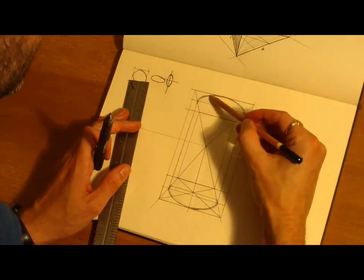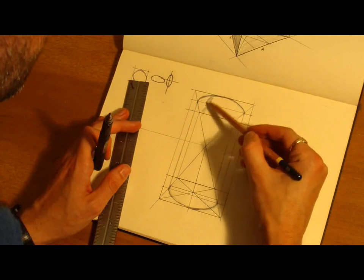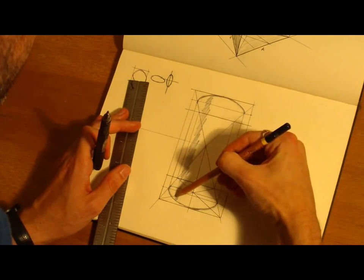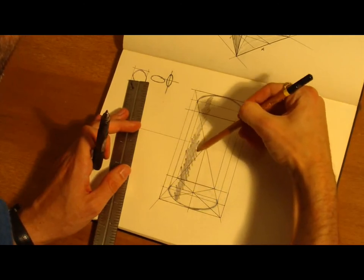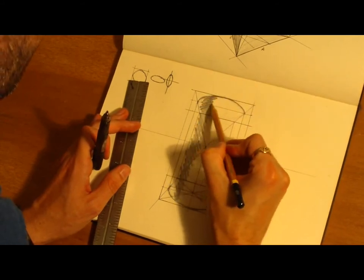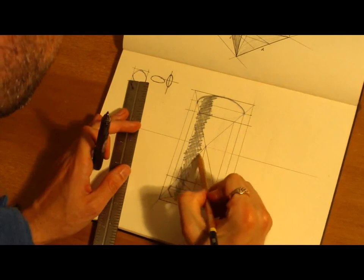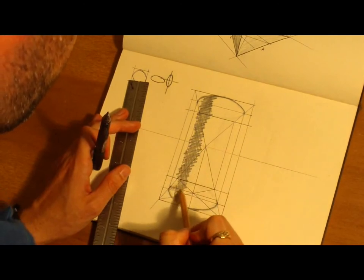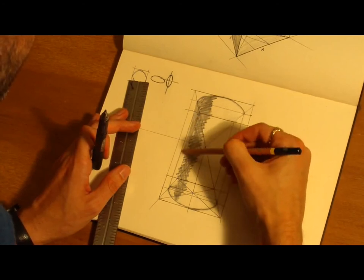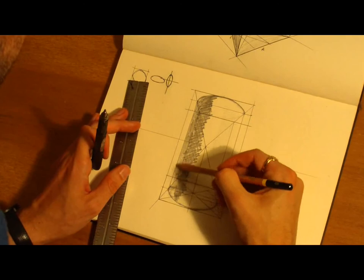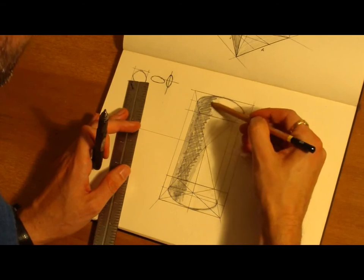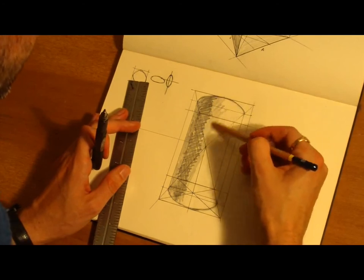And then I'm just going to add some value to it just to draw attention to its dimensionality. Starting out with the shadow core, a little bit of made up reflective light over here. And then progressing lighter and lighter as we come around the form.